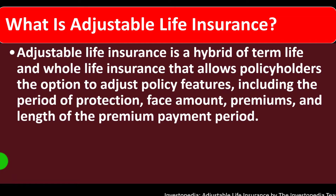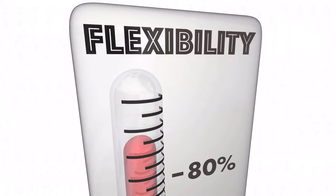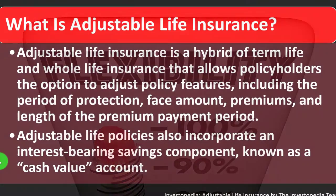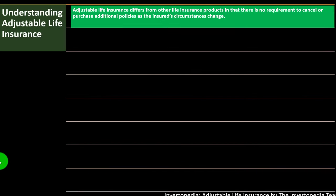So what is adjustable life insurance? Adjustable life insurance is a hybrid of term life and whole life insurance that allows policyholders the option to adjust policy features, including the period of protection, face amount, premiums, and length of the premium payment period. Adjustable life policies also incorporate an interest-bearing savings component, known as a cash value account.